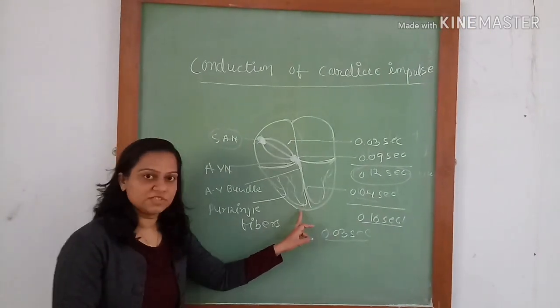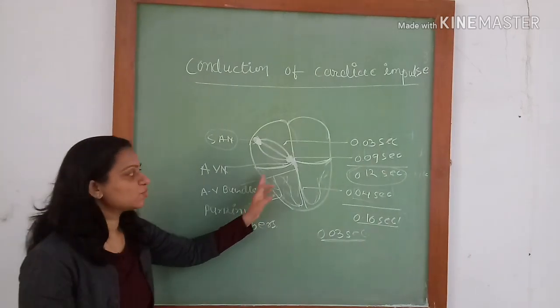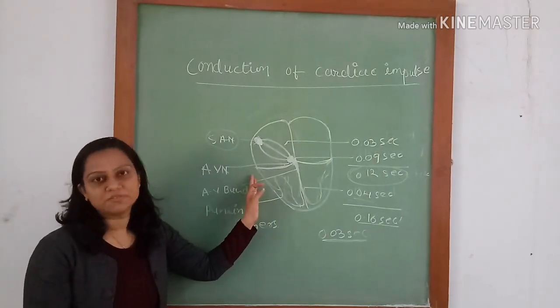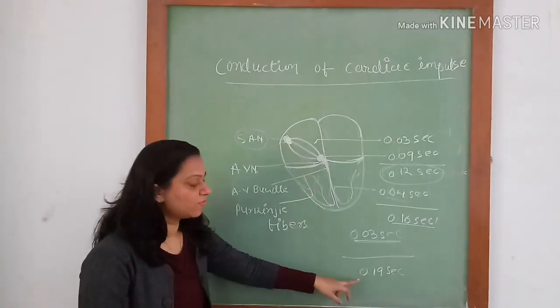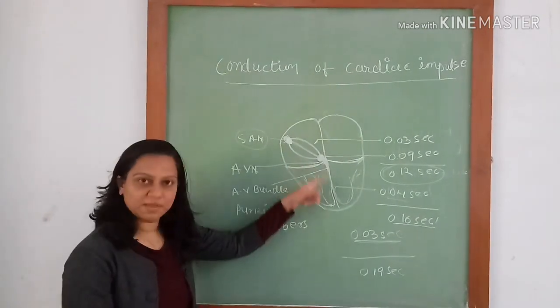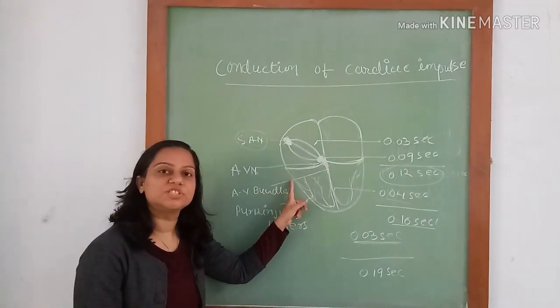From the bundle branches, impulse will take about 0.03 second to reach the terminals of the Purkinje fibers. So there will be total delay of 0.19 second for the impulse to reach from the SA node to the terminal of the Purkinje fibers.